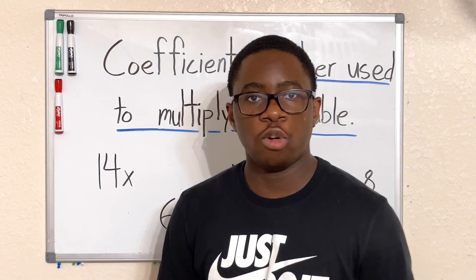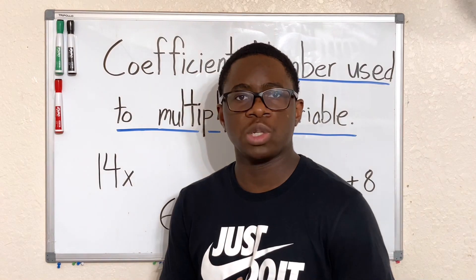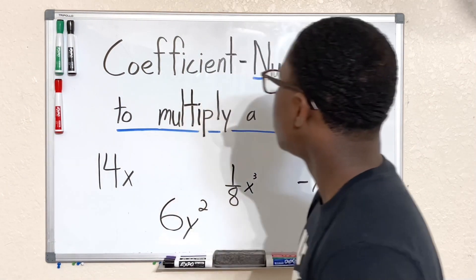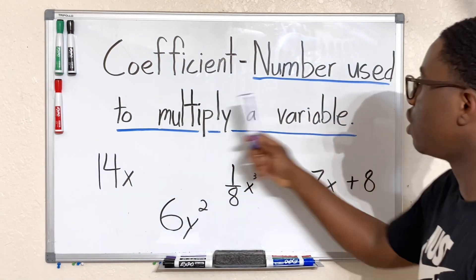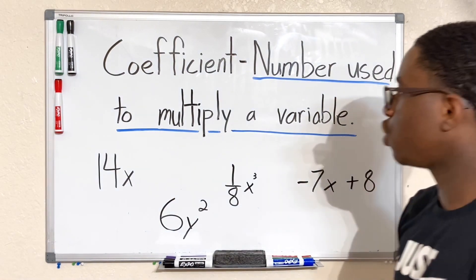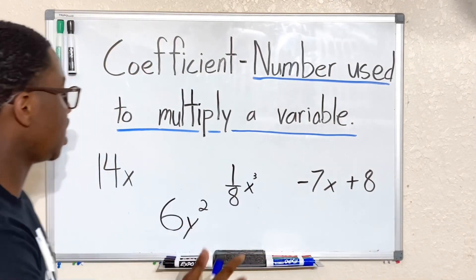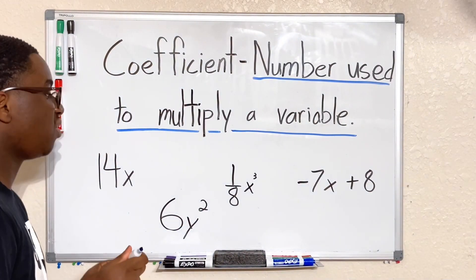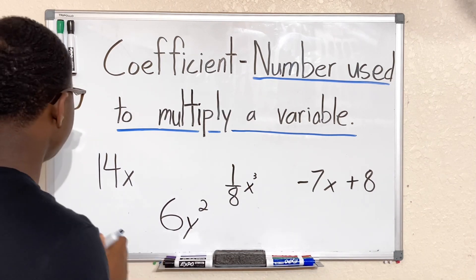Before we factor any trinomials with leading coefficients, we have to know what a coefficient is. A coefficient in simplest terms is a number used to multiply a variable. In all these examples we have coefficients and variables. Now it's our job to find out which ones are coefficients and which ones aren't.